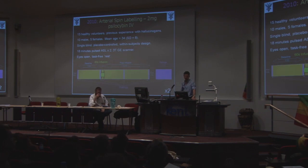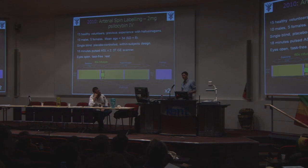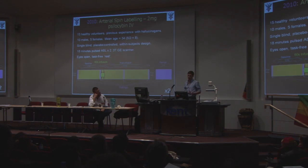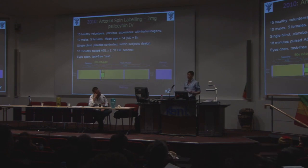This was the design for the arterial spin labelling study. Two milligrams was the dose IV — that we found was well tolerated yet produced relatively strong subjective effects. They compare, using the standard altered state of consciousness questionnaire of Dietrich's, to about 10 to 15 milligrams orally. So not of the same magnitude that Roland Griffiths is using, but it's been described as a moderate dose. At this dose the experience is more primarily perceptual, but still quite dramatic, and our volunteers have had quite profound experiences.